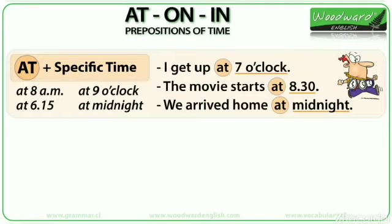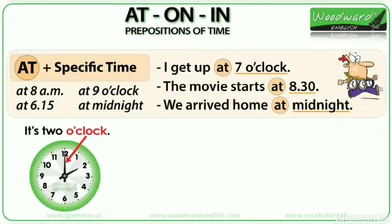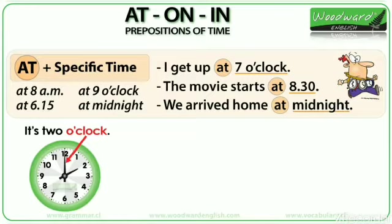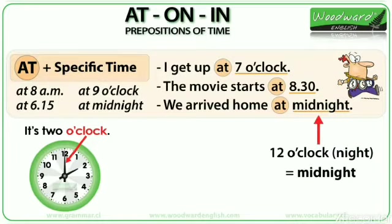Look at the first example: I get up at 7 o'clock. O'clock is used when there are no minutes — when the minute hand is on the 12. The clock shows 2 o'clock because there are no minutes. We say at midnight because midnight is a specific hour — it is 12 o'clock at night.